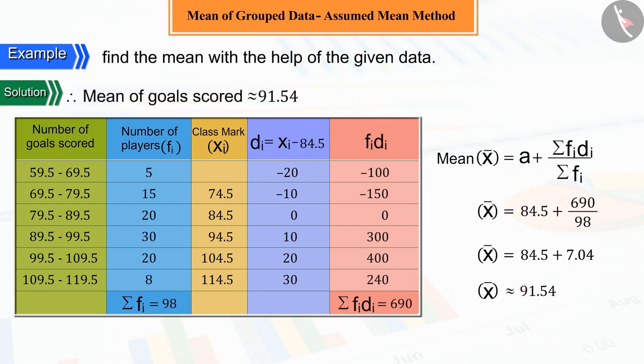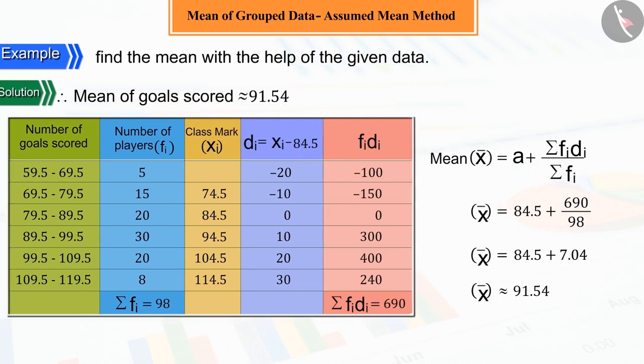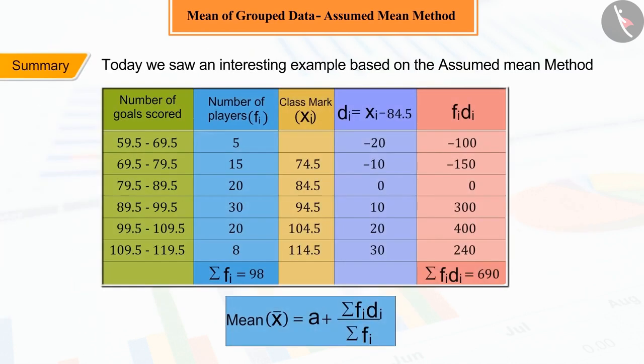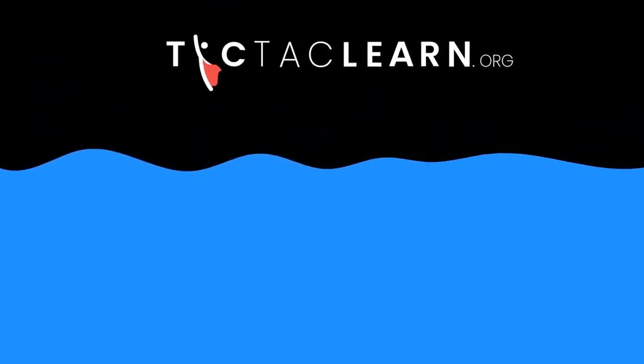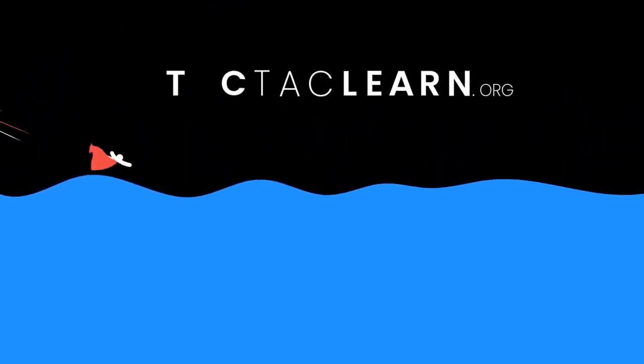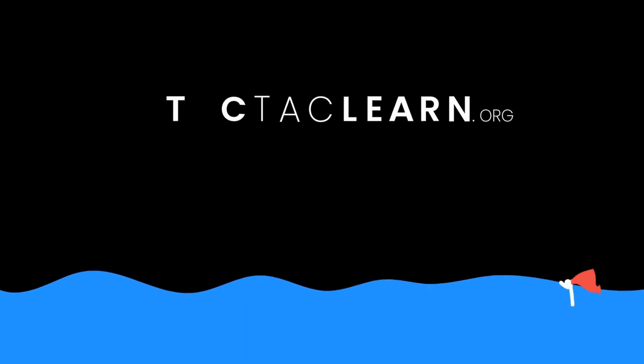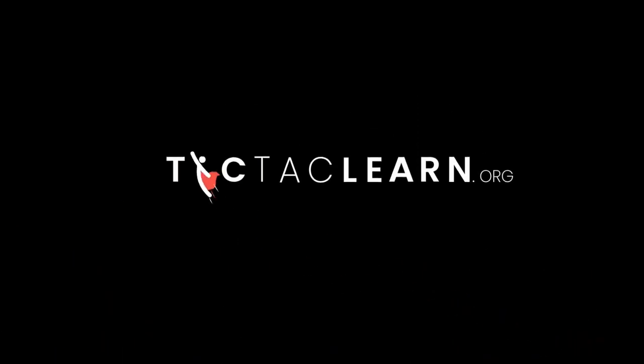Hence, we can say that the mean of the goal score is 91.54. So, hope you must have understood the assumed mean method of finding the mean. We'll see you in the next video. Thank you.